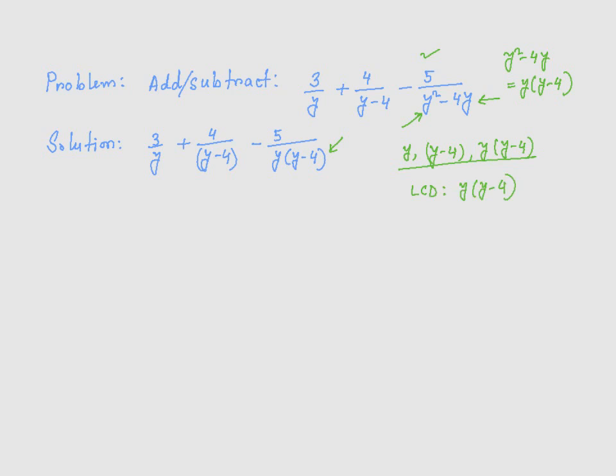Now that we know that the LCD is y times (y minus 4), we can make sure that every single rational expression here has the same LCD. So we can multiply the first term by (y minus 4), then multiply this one by just y. And this one already has the same LCD in the denominator for all of these rational expressions.